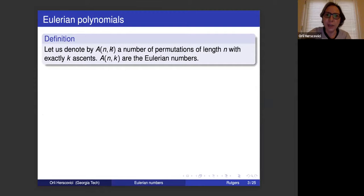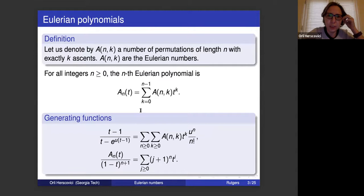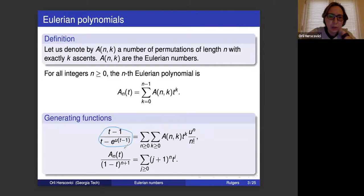If we denote by A(n,k) the number of permutations of length n with exactly k ascents, those numbers A(n,k) are the Eulerian numbers. From Eulerian numbers we can construct the Eulerian polynomials, whose coefficients are Eulerian numbers. We can define Eulerian polynomials by different generating functions — one involving an exponential function in the denominator, and another given as a straightforward sum. We will use two of these generating functions.